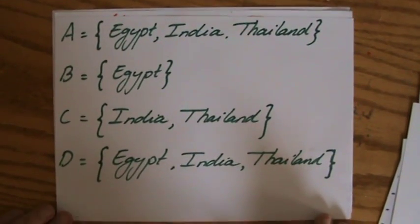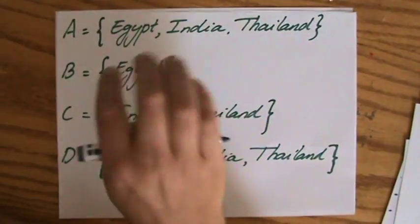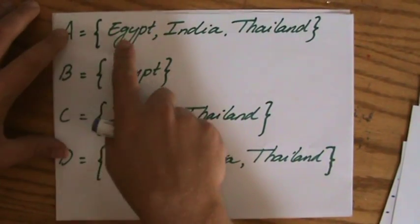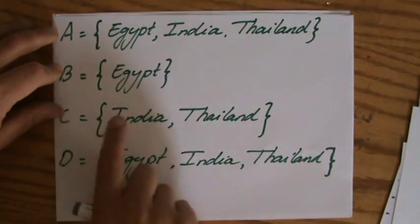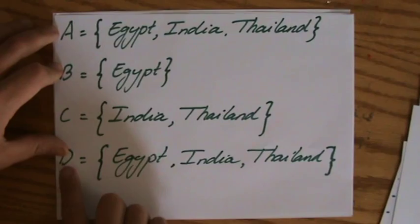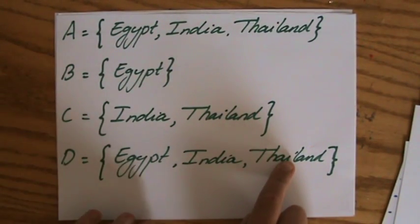Let's say we have four sets A, B, C and D. I just randomly wrote down three countries. Set A contains Egypt, India, Thailand. B contains Egypt. C contains India and Thailand. And D contains Egypt, India and Thailand again. Now I can say the following.